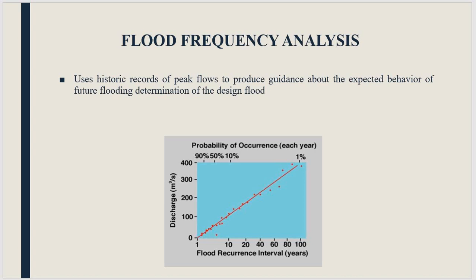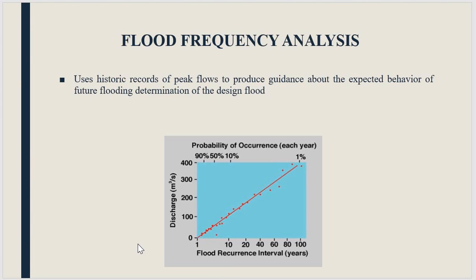The last method is flood frequency analysis. A flood frequency curve records recurring rainfall and discharge over periods from 1 year up to 100 years. Using these historic records of peak values, we can calculate the runoff for a particular period. These are all nine methods for estimation of runoff.